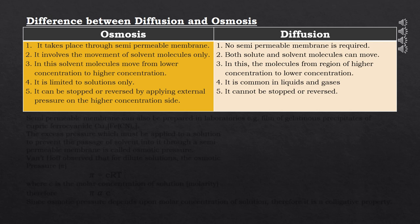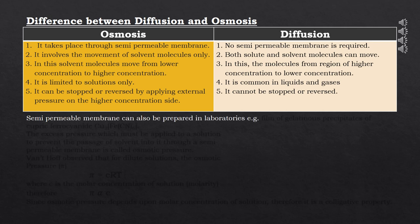Fourth, osmosis is limited to solutions only, while diffusion is common in liquids and gases. Fifth, osmosis can be stopped or reversed by applying external pressure on the higher concentration side, but diffusion cannot be stopped or reversed. Nature has provided many such membranes in plants and animals. Semi-permeable membranes can also be prepared in laboratories; for example, a film of gelatinous cupric ferrocyanide Cu₂Fe(CN)₆ is an artificial semi-permeable membrane.